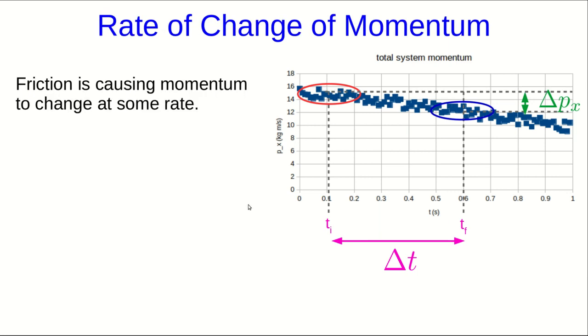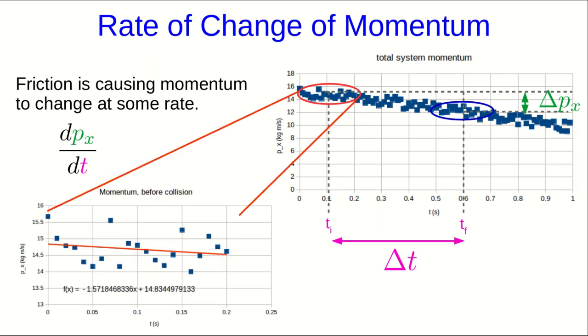Our hypothesis is that that change in momentum can be explained entirely by the effects of friction. So we want to measure a rate of change of momentum, right? A derivative of momentum with respect to time. But that's just a slope.